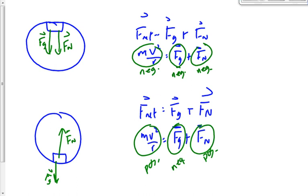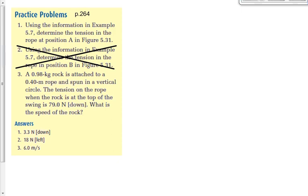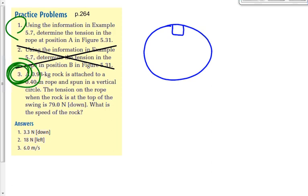Now let's solve the homework problems from page 264, numbers 1 and 3. Problem 3: a 0.98 kg rock is attached to a 0.4 m rope and spun in a vertical circle. The tension in the rope when the rock is at the top of the swing is 79 N downward. What's the speed of the rock? Draw it at the top of the circle — gravity acts down and tension in the rope acts down as well. We'll call that the normal force F_N.